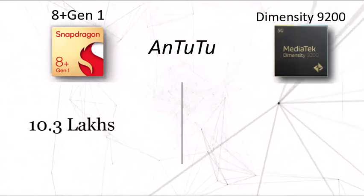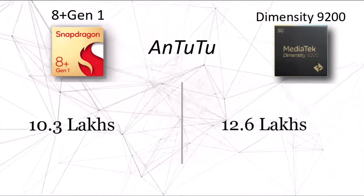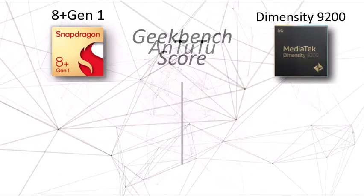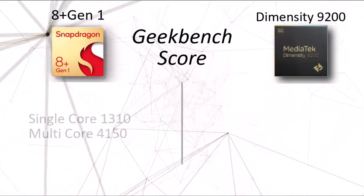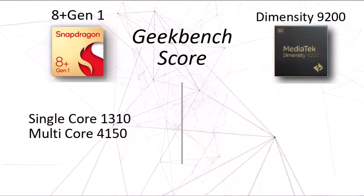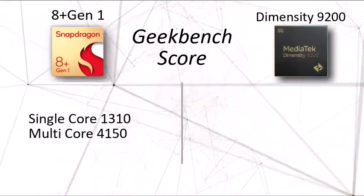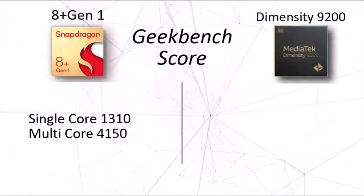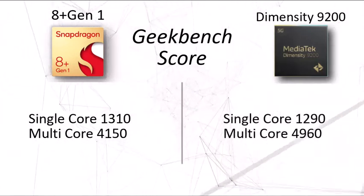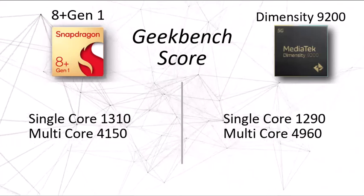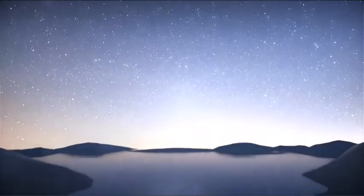The AnTuTu scores are impressive numbers — 10.3 lakhs for the Snapdragon 8 Plus Gen 1, versus 12.6 lakhs for the Dimensity 9200. For Geekbench scores, it's a bit mixed: the Snapdragon leads in single-core by about 2% with a score of 1310, and multi-core at 4150. However, the Dimensity leads in multi-core by 20% compared to the Snapdragon 8 Plus Gen 1, scoring 4600.